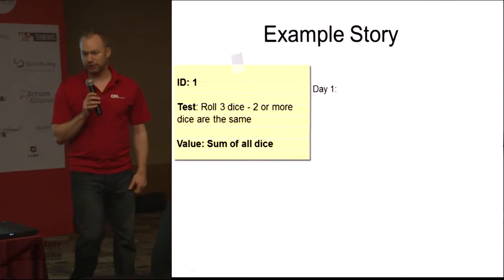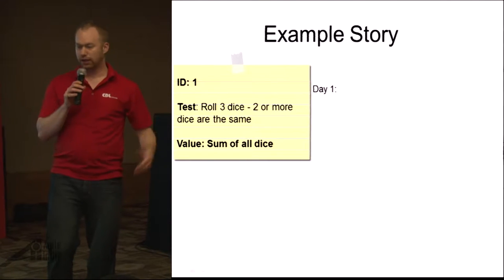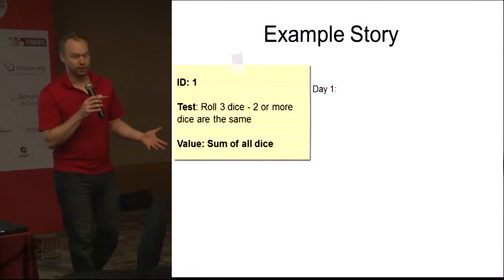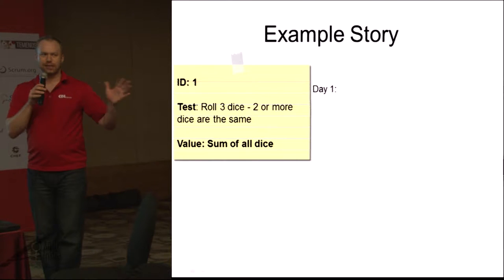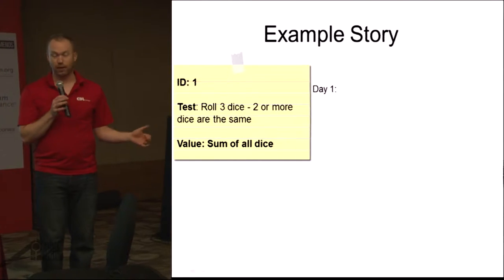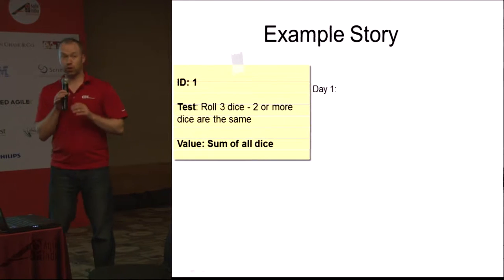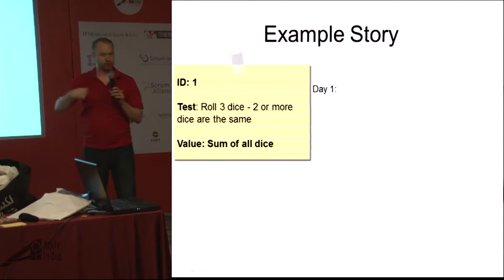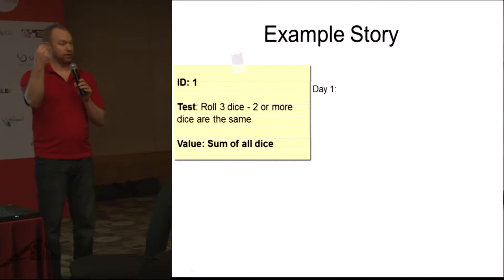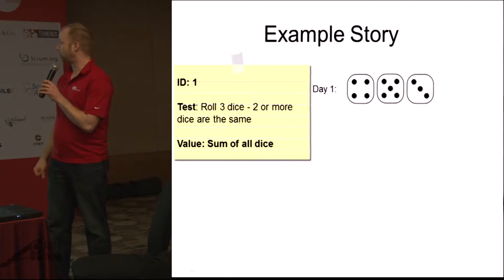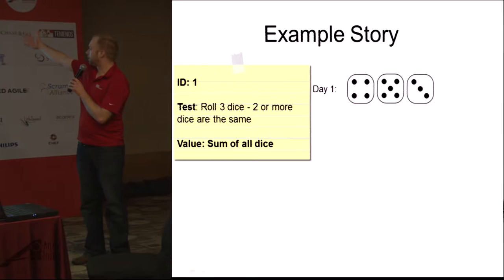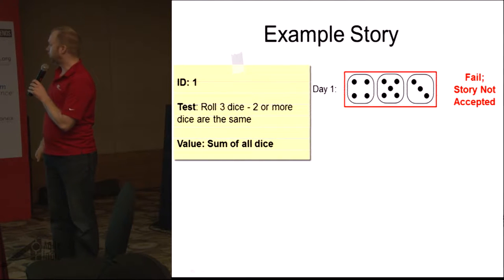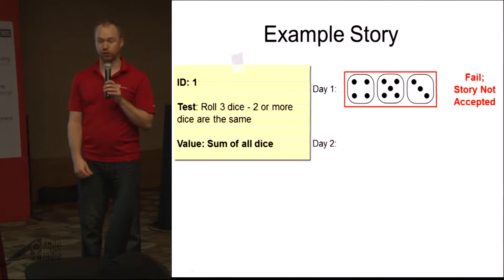We're going to show you what the stories look like. This is an example story — at the top there is a story number and an ID. Each story has a test on it. We work on user stories until the user story can be accepted, but we're not exactly sure how long a user story is going to take. We might have an estimate, but we don't know in reality. The user story is done when the test has been met. For example, for each day of the iteration you roll three dice, and when two or more dice are the same, the story is complete.